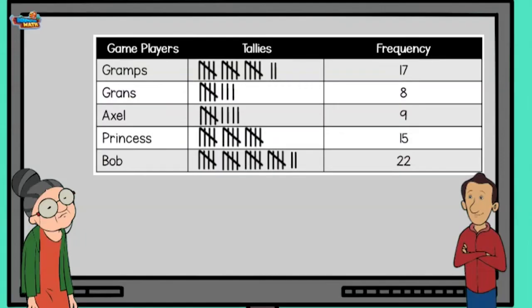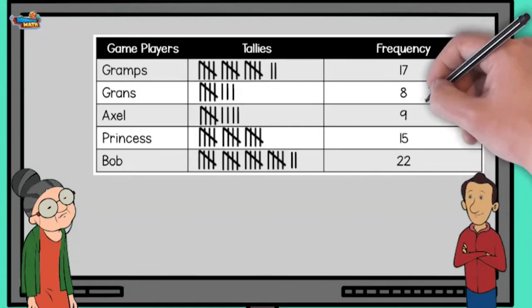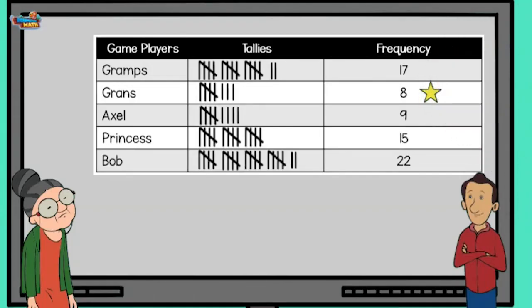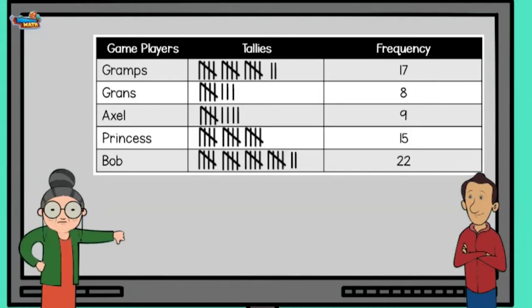Frequency tables can help determine information like who won the least amount of games. Looking at the chart, it looks like it was you. It sure was an unlucky day for me. The grandkids said they dominated us in the game this weekend. Did they win more games than Gramps and I?